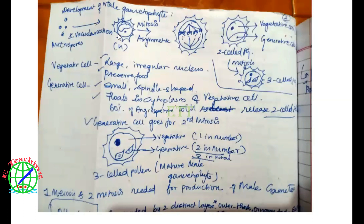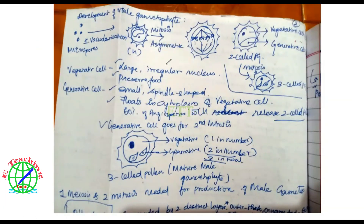In the outer layer, we will talk about mitosis. The cell will undergo asymmetric division. Consider this one cell — the transverse division gives one large cell and one small cell.